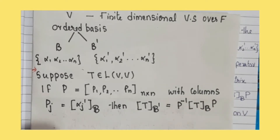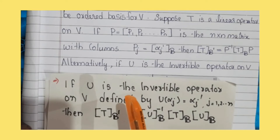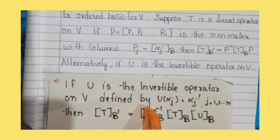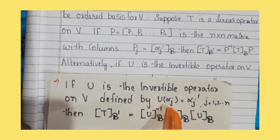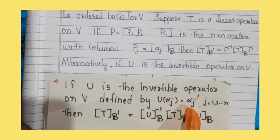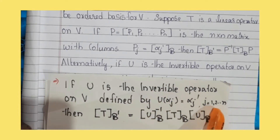The first part establishes that result with P. The second part is: alternatively, if U is the invertible operator on V defined by U of alpha j equal to alpha j', for j running from 1 to n.